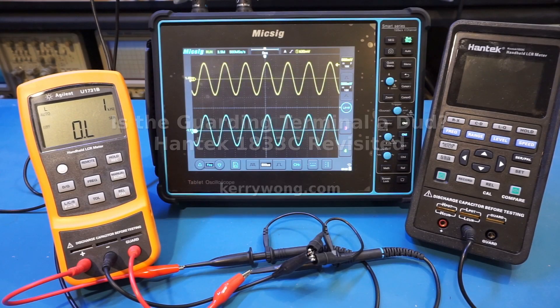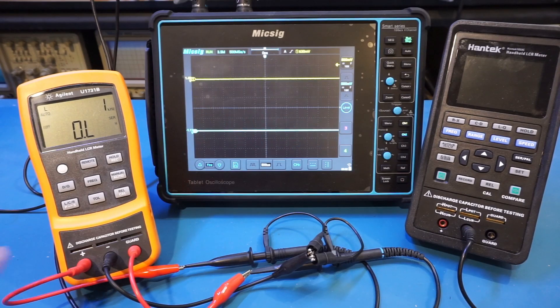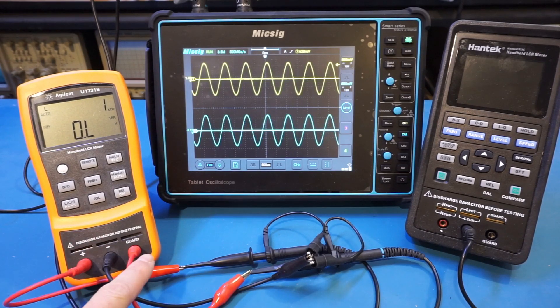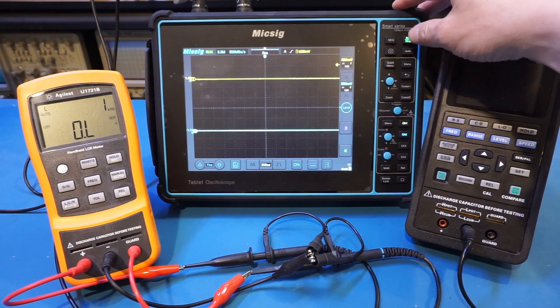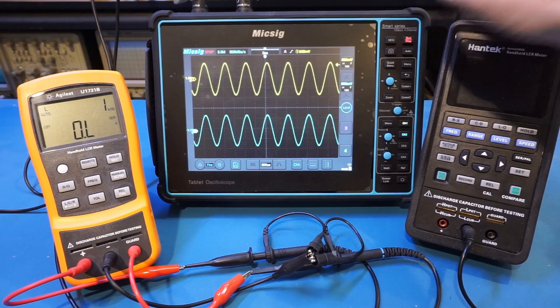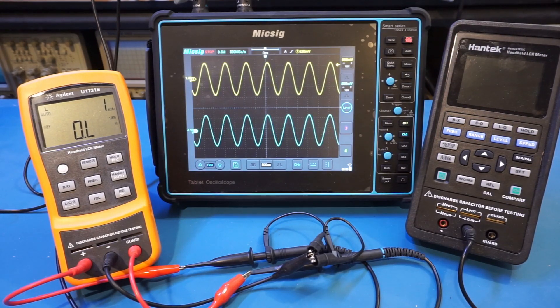Hi, what you're looking at here on the oscilloscope are the waveforms from the test output and the guard terminal from the Agilent 1731b LCR meter. I have done a couple of videos explaining what guarding is and how it impacts measurements, and I'll provide links to those videos in the video description below.